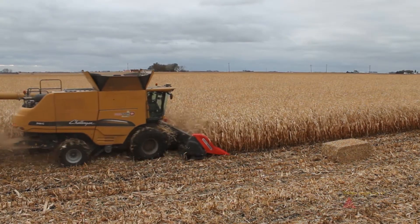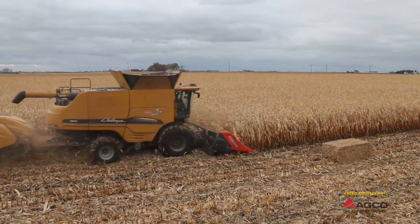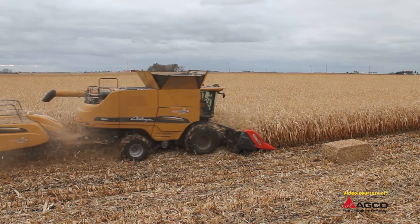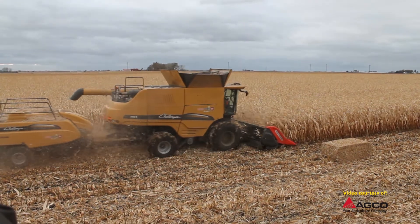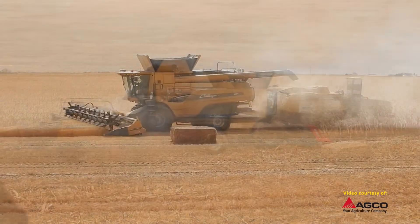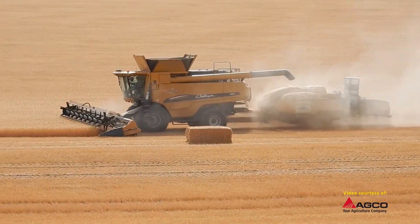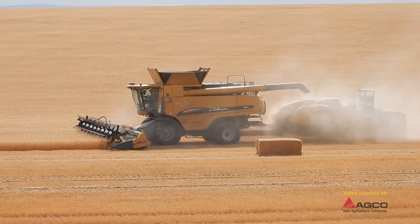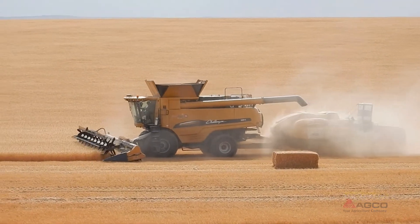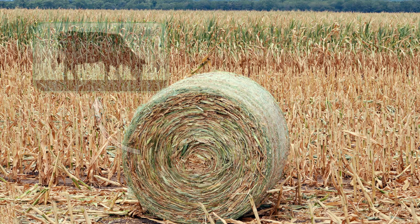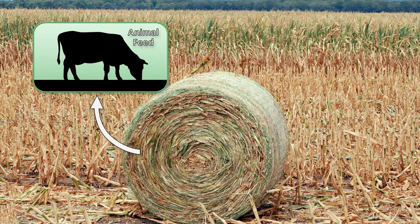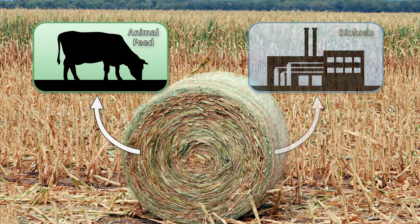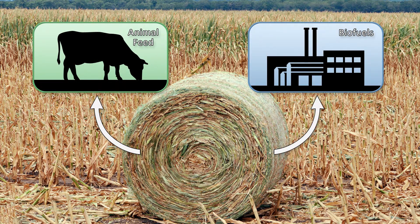High yields and continuous corn crop rotations create residue management challenges. Partial residue harvest is often a positive alternative to tillage as a residue management strategy. When managed correctly, a partial stover harvest system delivering to emerging animal feed and bioenergy markets can have significant economic and environmental benefits.